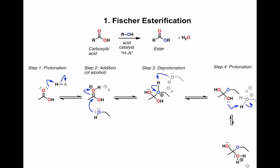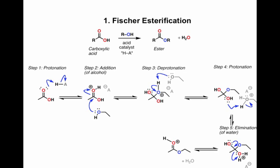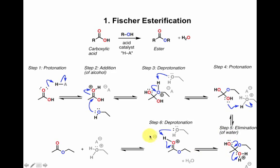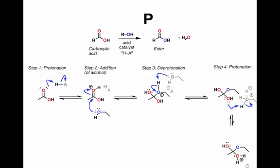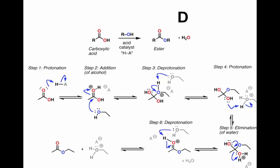Showing deprotonation and protonation as separate steps is the long way to do it — sometimes you'll see them drawn as happening at the same time, which we call proton transfer. Once we have our good leaving group, water, the lone pair from the adjacent OH can come down. We're forming a new carbon-oxygen pi bond and breaking a bond to carbon, eliminating water. This next step is called elimination. Finally, deprotonation of our ester by solvent gives us our neutral ester as product. So that's our mechanism — six steps: protonation, addition, deprotonation, another protonation — together called proton transfer — elimination, and deprotonation. PADPED: P-A-D-P-E-D.